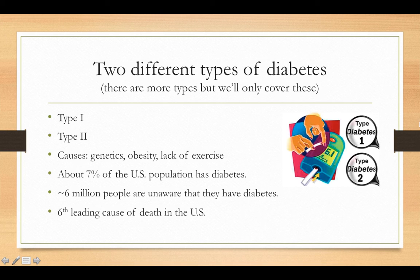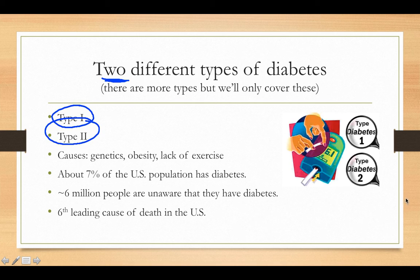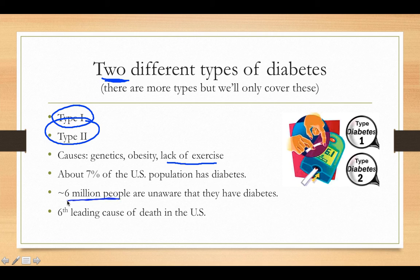There are two types of diabetes we'll cover in class — types one and two. Causes can be genetic, related to obesity, or linked to lack of exercise. This disease affects a lot of people: six million people are unaware they have diabetes, and it is the sixth leading cause of death in the US.